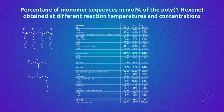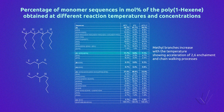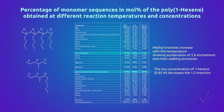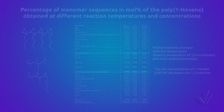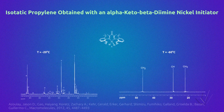For example, it can be said that methyl branches increase with temperature, showing acceleration of 2-6 enchainment and chain-walking processes. Another conclusion is that a low concentration of 1-hexene, for example 0.85 molar, decreases the 1-2 insertion, that is, the one giving consecutive hexene sequences. With the knowledge of all the sequences present, it is possible to propose a mechanism of this type.